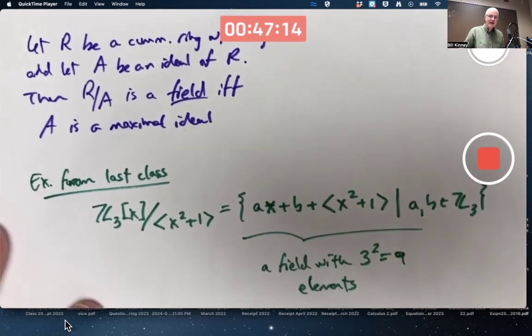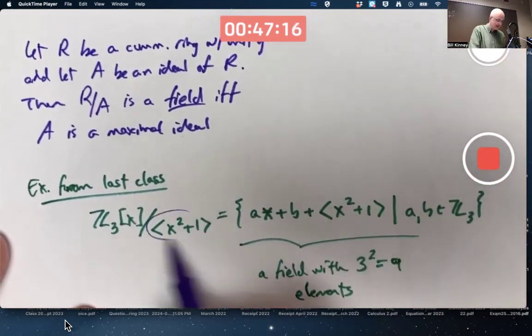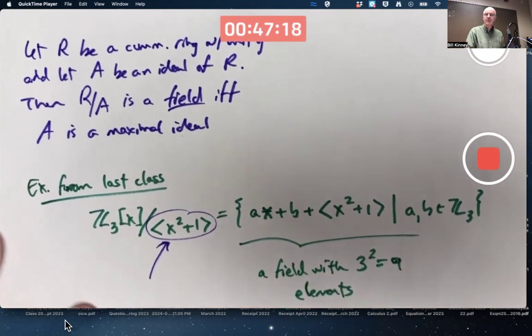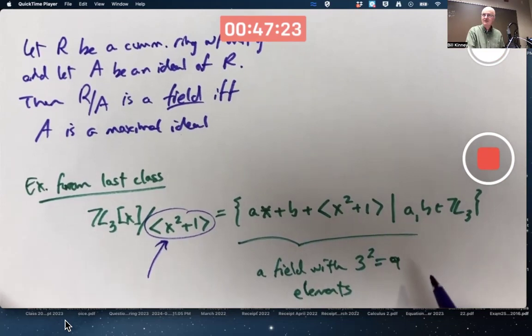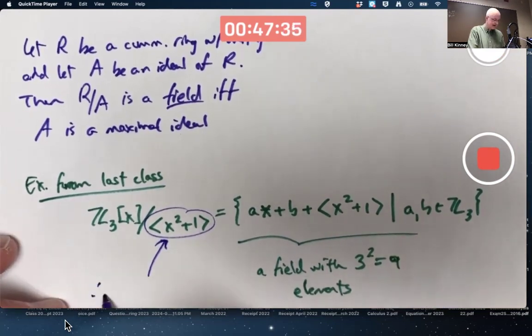That must mean that that ideal that we are modding by is a maximal ideal. Right? Because this is a field. I didn't prove it was a field. You're just trusting me. We found a multiplicative inverse of one element in it. Therefore, this ideal...